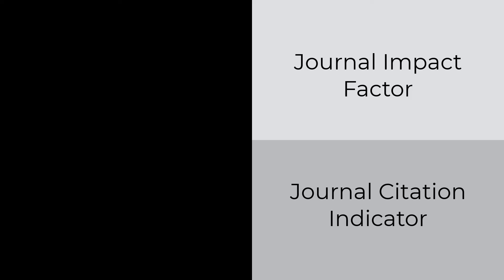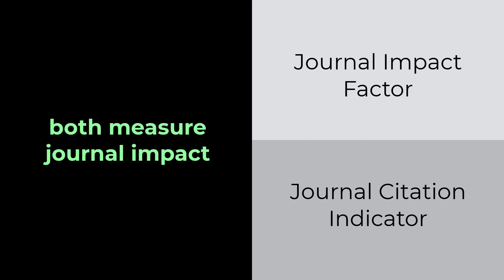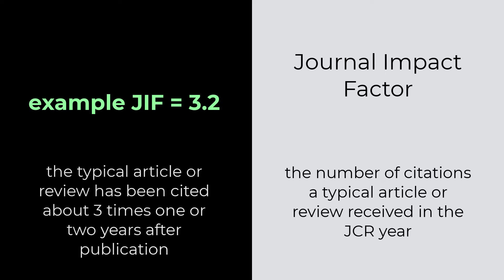Let's start by understanding what each metric measures. Both the JIF and the JCI measure journal impact, but they accomplish this in different ways. The Journal Impact Factor measures the number of citations a typical article or review received in the JCR year. If a journal has a JIF of 3.2, you could say that the typical article or review in that journal has been cited about three times, one or two years after publication.